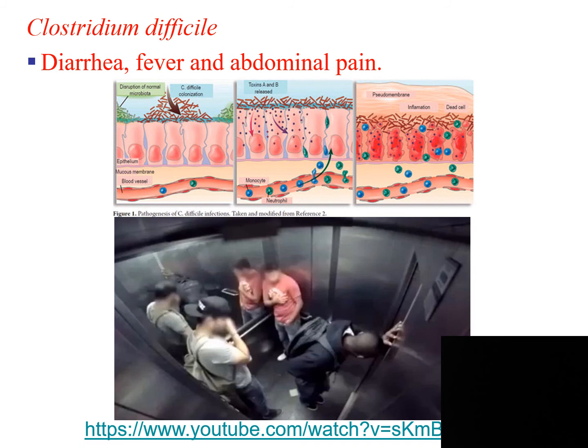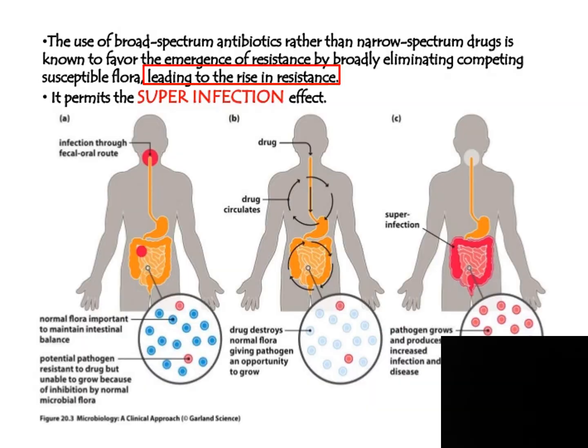Clostridium difficile will then overpopulate the large intestines, causing diarrhea, fever, and abdominal pain. This can also lead to a rise in resistance. Taking broad-spectrum antibiotics is not a good thing — it can lead to a rise in resistance and it permits these super infections.